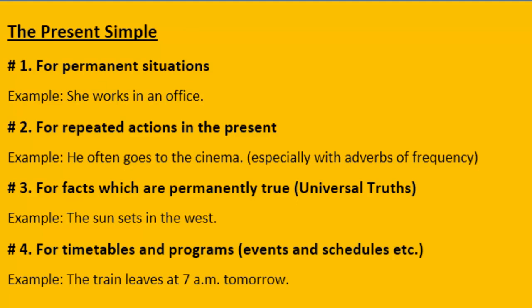Use number three: for facts which are permanently true, or in simple words, for universal truth — the truth which is universally the same, always remains the same, and doesn't change. For example: 'The sun sets in the west.' The sun always sets in the west; it can never set in the east, in the north, or in the south. For such facts and universal truths we use present simple.